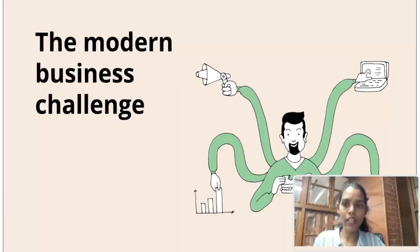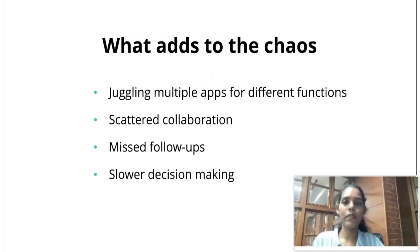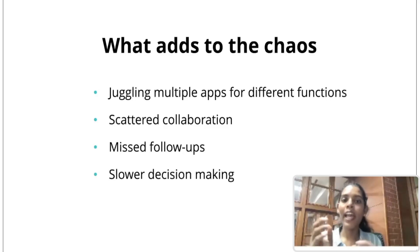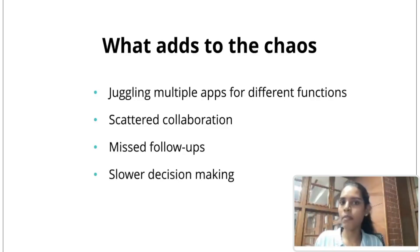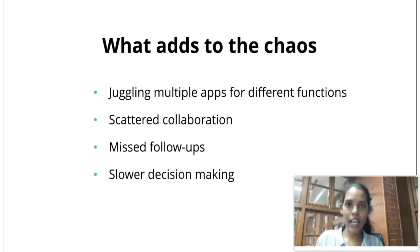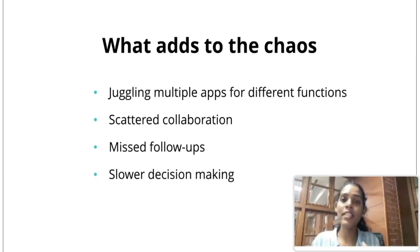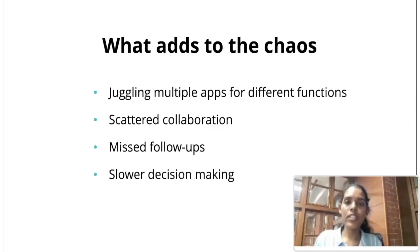Now let me address some modern business challenges organizations face today. When using multiple apps, there comes a point where you need to juggle between them, and you lose a lot of time. Different functions like sales, marketing, support, and project management all require different apps. When your data is siloed across different apps that aren't connected, your collaboration becomes scattered, this leads to missed follow-ups and ultimately affects your decision-making process.